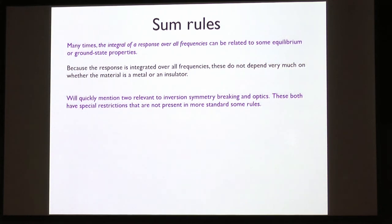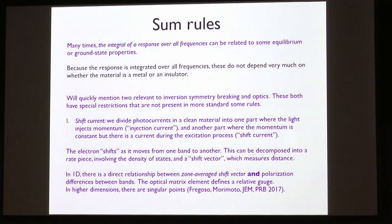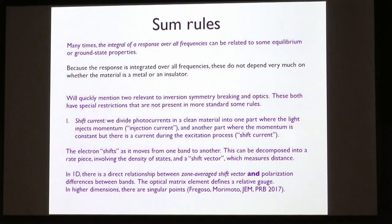The first sum rule is related to the shift current, which people like Andrew Rappe have worked on. When you look at photocurrents in a clean material — light shining on the material producing current — we divide them into two families. The injection current is where you inject momentum and carriers carry it as current. The shift current is where the excitation process itself, with the electron moving from the lower to the upper band, generates a current: the electron was at the same crystal momentum, but those bands can be thought of as having different locations in the unit cell, so the electron moves over a bit.